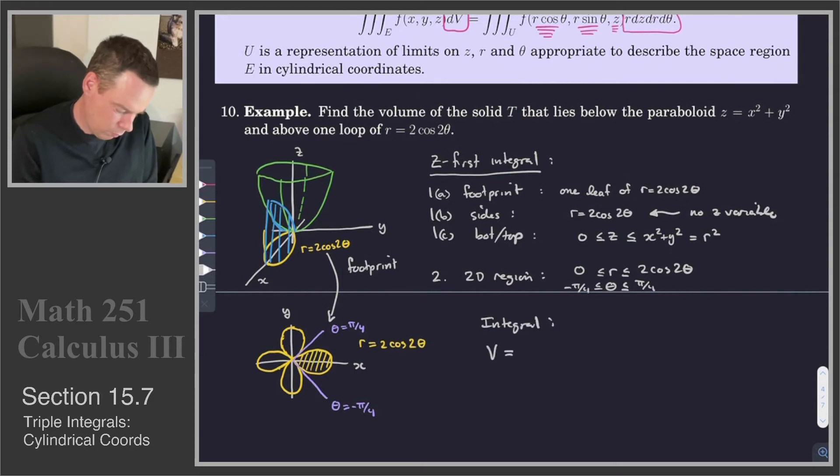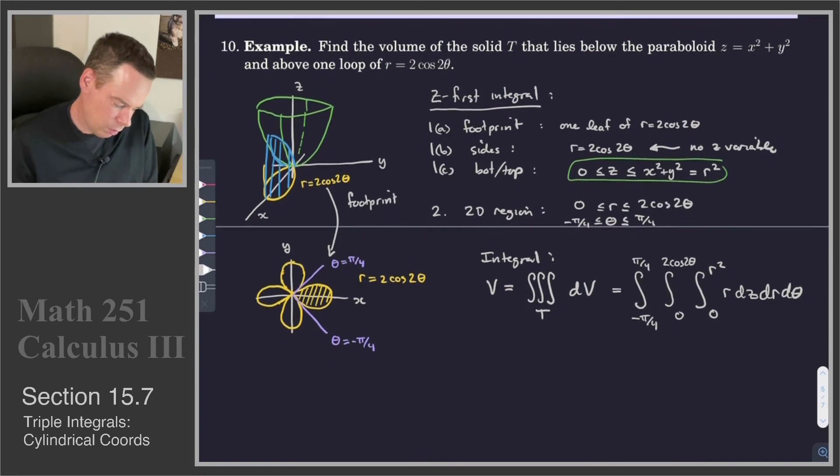We are interested in the volume, so V. And that's going to be the triple integral over the region T dV. Since it's a volume, we just integrate over the region of the constant function 1. Now we're going to convert to cylindrical coordinates. And so this is where all of our work above comes into play. dV for the switch to cylindrical coordinates becomes R dz, and then we'll go dr d theta for the outer two integrals. Z goes over the values from 0 to R squared. r is going to go over the values 0 to 2 cos 2 theta. And theta is going to go over the values from negative pi by 4 to pi by 4.